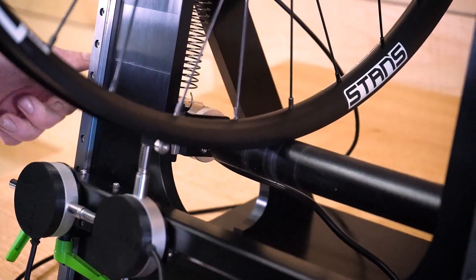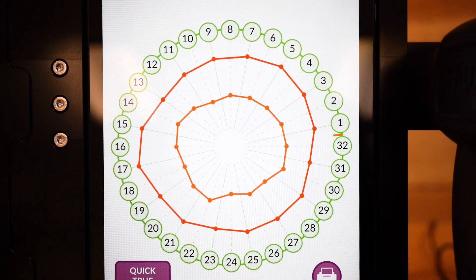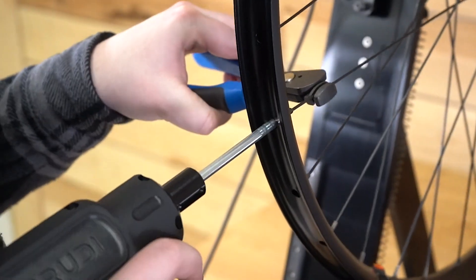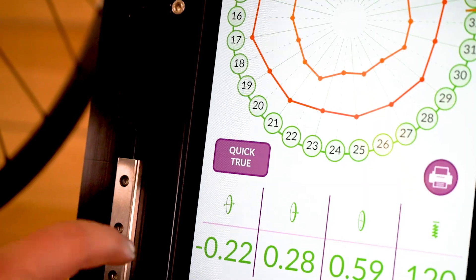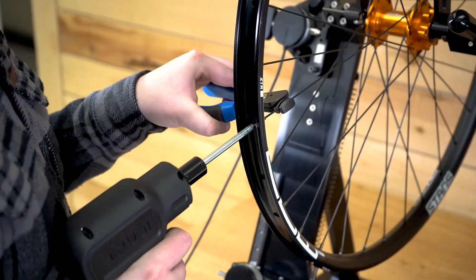After a quick check, we confirm that we've achieved near-perfect truing in just one round. If any minor adjustments are needed, the Quick True Mode selects just four spokes for fine-tuning, without requiring additional tension data.